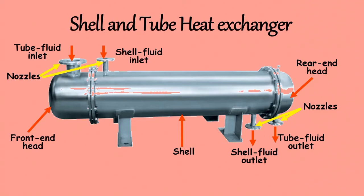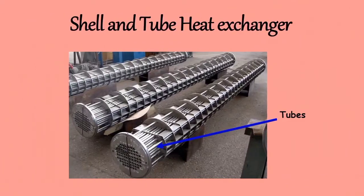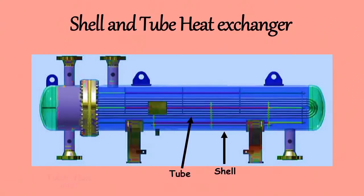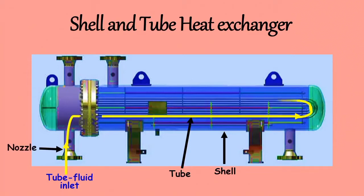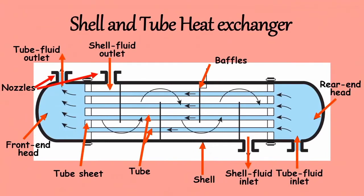The next component is the Tube. It is the most important part of the shell and tube heat exchanger. The tubes are placed in a tube bundle inside the shell, and are either rolled or welded to the tube sheet. The tube side fluid first enters a header through a nozzle, then flows through the tubes in parallel flow. Depending on how many passes through the tube, there are one pass or more than one pass types. In general, an even number of tube side passes are used.